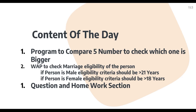Hello and welcome to my class of computer science for 11th class. Today the content is based on programming. We'll do two programs. First, a program to compare five numbers to check which one is the greater or bigger number. Second, we will check the marriage eligibility according to the person's gender — if male, the age should be more than 21 years, otherwise if female, more than 18 years.